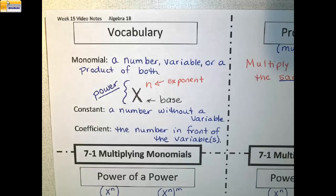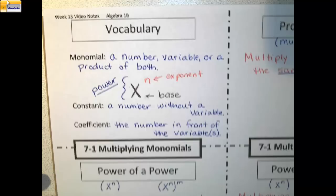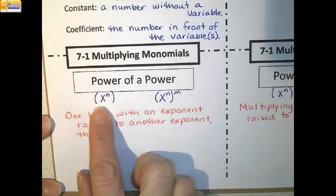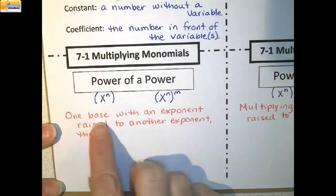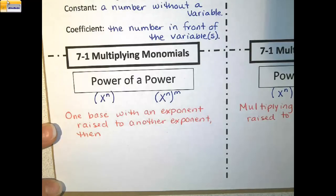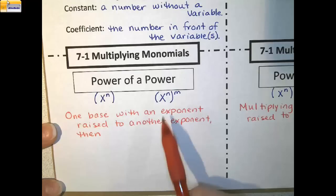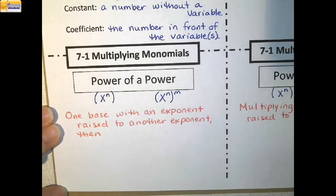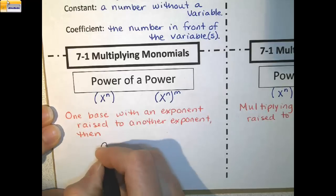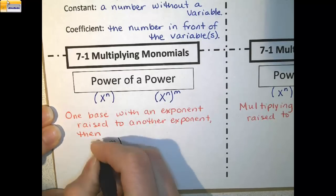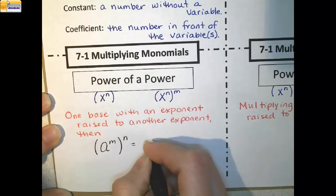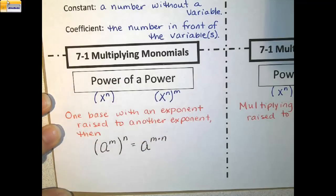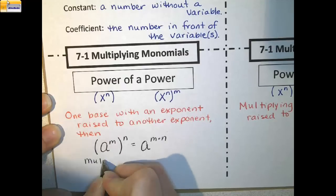We are now going to move on to the power of a power. A power, such as x to the n, when raised to another power, means that we start with one base and exponent and raise it to another exponent. The example we use is a to the m, raised to the n, and this becomes a to the m times n. So when we raise a power to a power, we multiply the exponents.